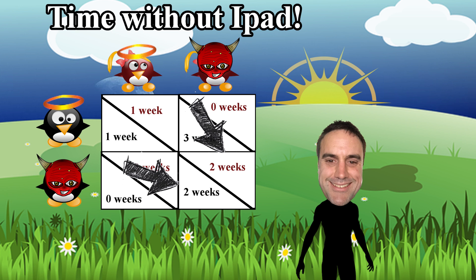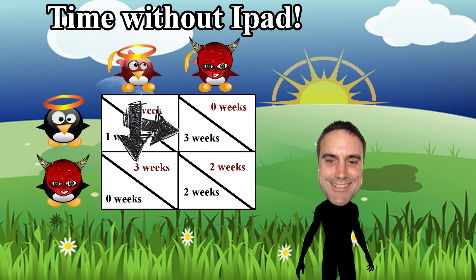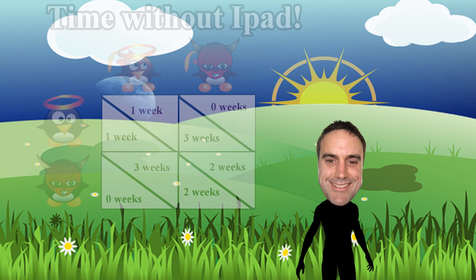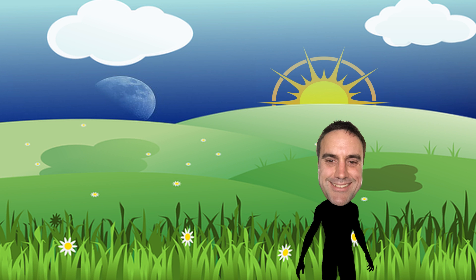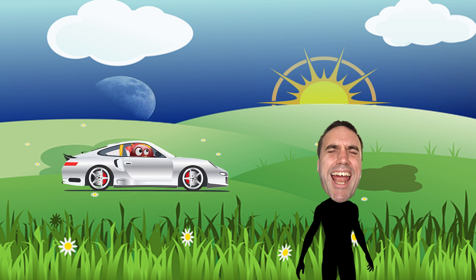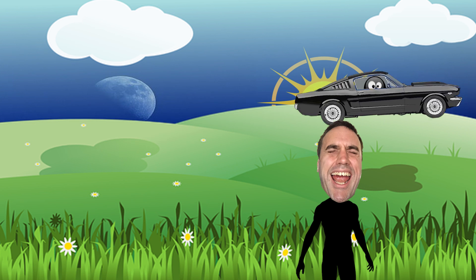If both children choose to blame first, then one confesses later, they would just be ensuring a worse punishment for themselves. As such, it would be pretty dumb — assuming the other doesn't change strategies, of course. Then again, there's a reason we don't let kids drive cars.